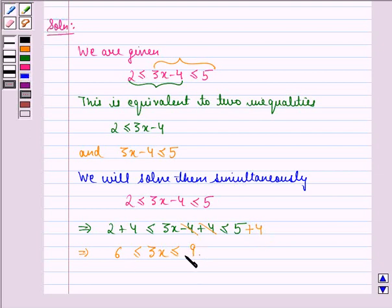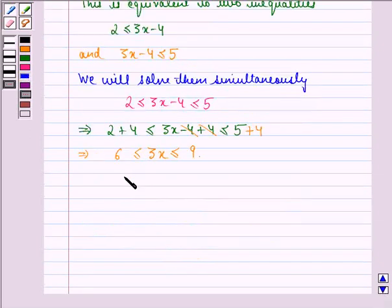Now we can divide throughout by 3, so we have 2 is less than or equal to x is less than or equal to 3.